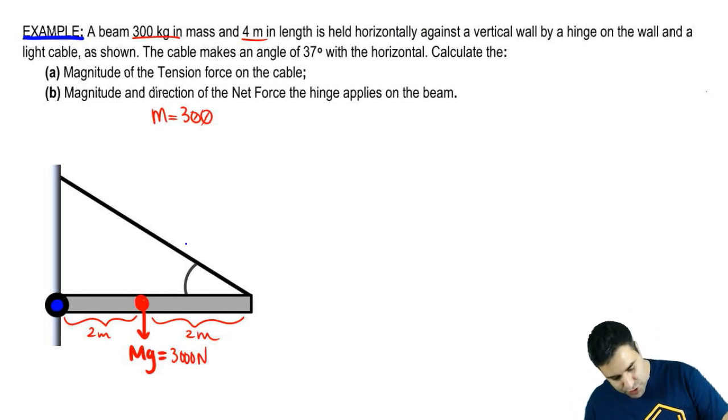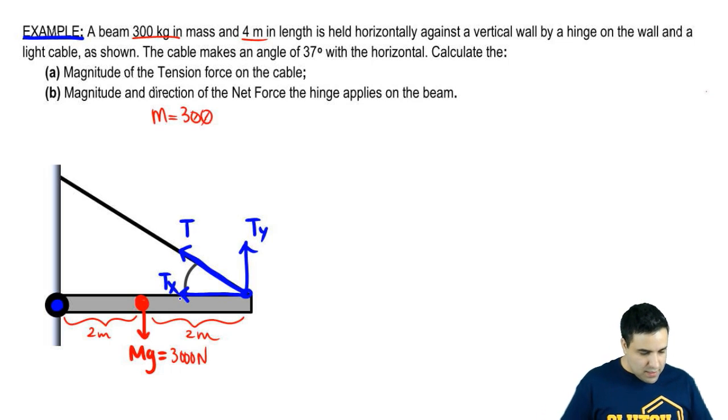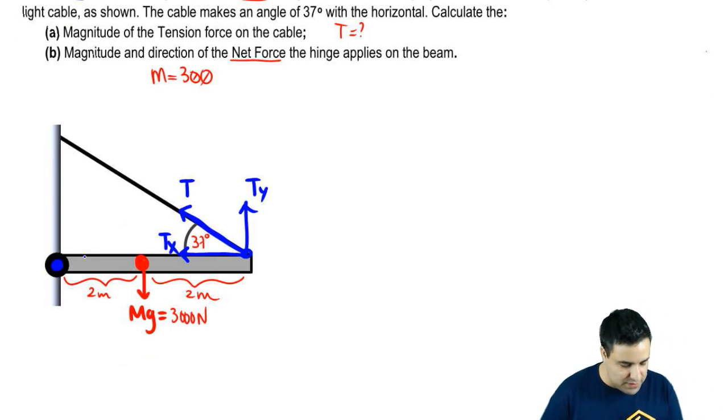It's 4 meters in length. That means that this distance here is 2 meters. And then this distance here is 2 meters. And I have a tension. It's held horizontally against the vertical wall by a hinge. Got a hinge here. And a light cable shown. So there's going to be a tension here. This is T. It's going to split into a Ty and a Tx. I'm going to put Tx right here. The angle here is 37 degrees.